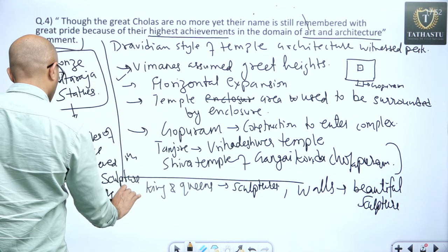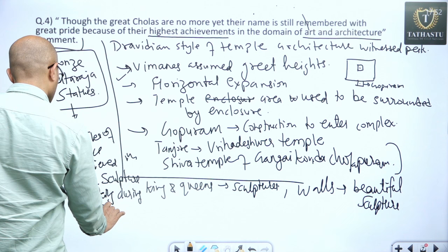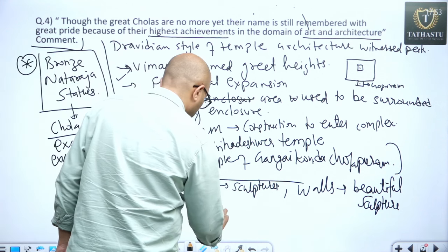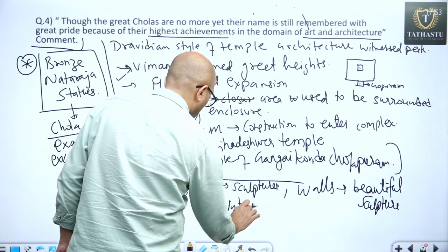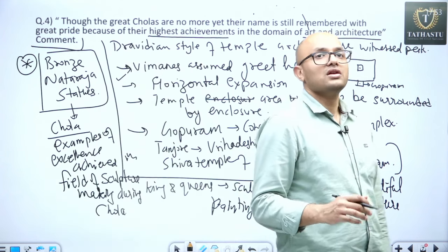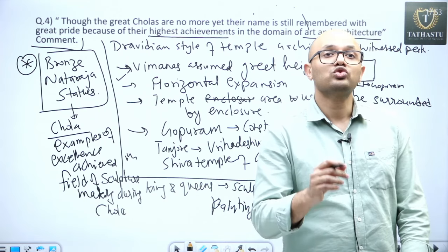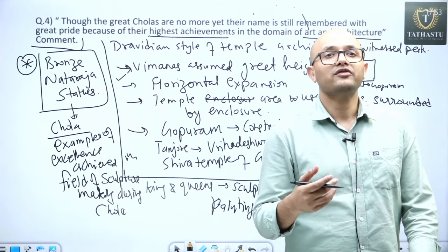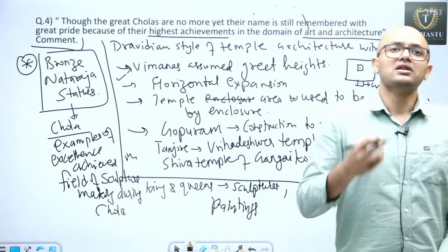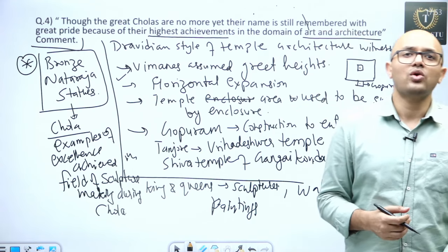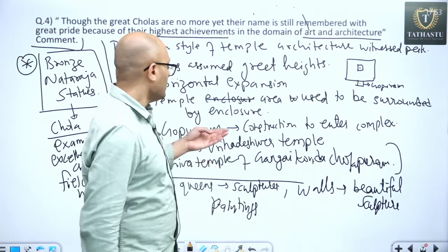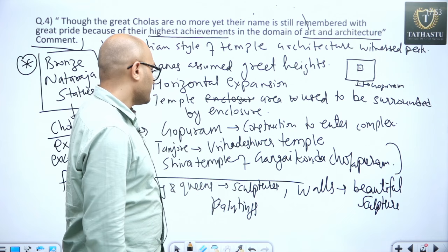During Chola time. Also, if we talk about the fine arts, paintings also witnessed, paintings also witnessed great progress. The walls of these temples used to be adorned with various secular as well as religious paintings. The painting of Raja Raja talking with his teacher was found from the Brihadeshwara temple of Tanjore.